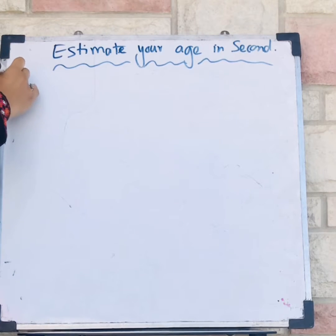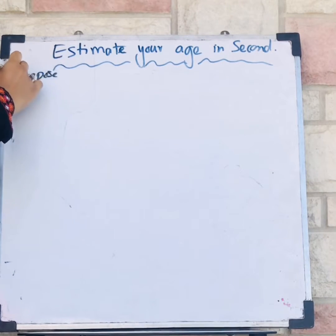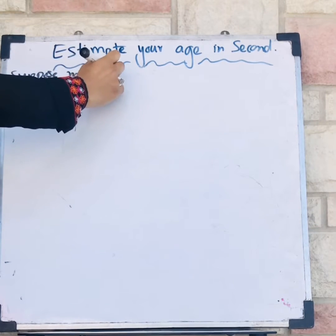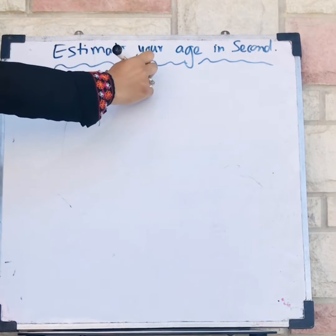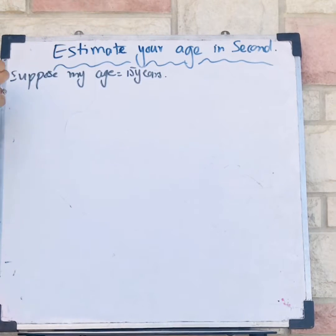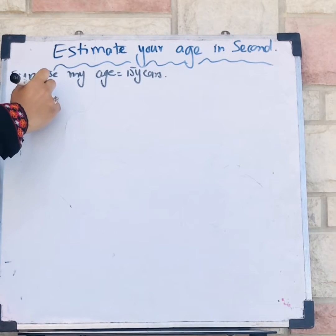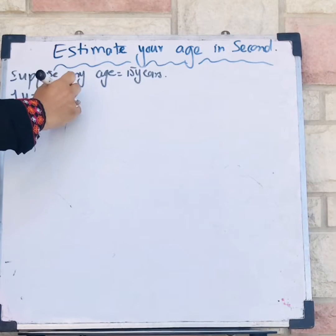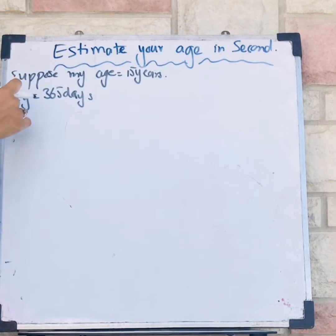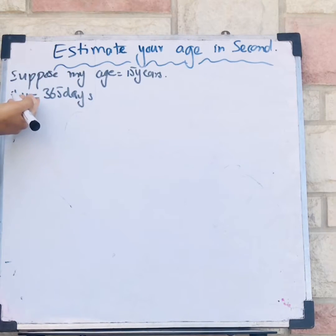Suppose my age is 15 years — that is an assumption. I know that one year is equal to 365 days, so I have to multiply 15 years with 365 days.